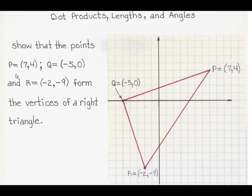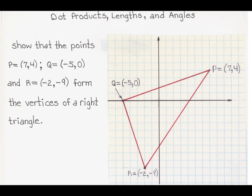Here's the problem: show that the points where P is equal to (7, 4), Q equals (-5, 0), and R is equal to (-2, -9) form the vertices of a right triangle. For the purpose of making it easy to follow, I'm going to ask you to pause the video at this moment and copy the problem and the diagram.